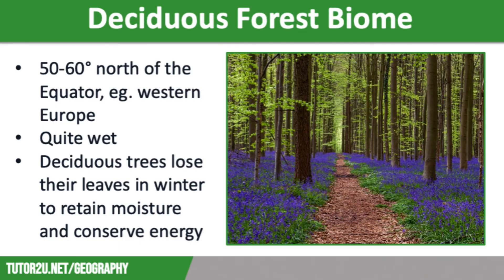We learned about the deciduous forest in the last video on small-scale ecosystems, but let's have a quick recap. Deciduous forests lie in higher latitudes, roughly between 50 and 60 degrees north of the equator, in places such as Western Europe and North America. The climate tends to be quite wet due to the jet stream bringing in rain. Deciduous trees lose their leaves during the winter to retain moisture, but also because there is less opportunity for photosynthesis due to the reduced sunshine.